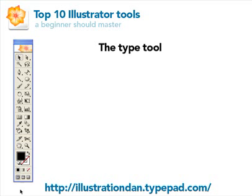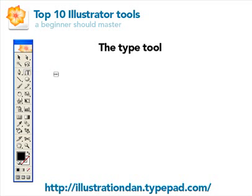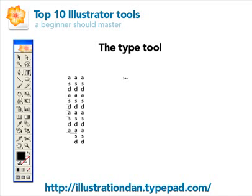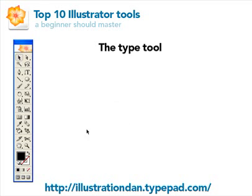The next option is the vertical type tool, and it pretty much does what it says — it allows you to type vertically. I haven't used this very much but I'm sure it'll come in handy someday.